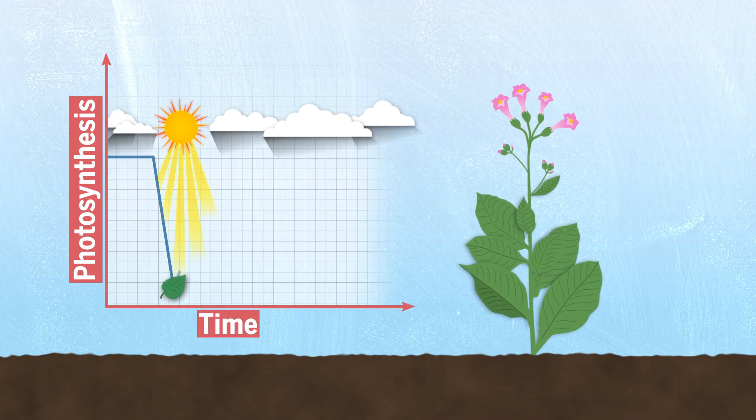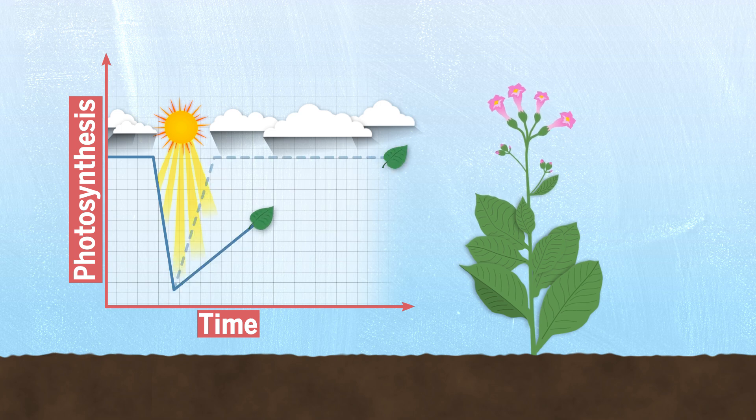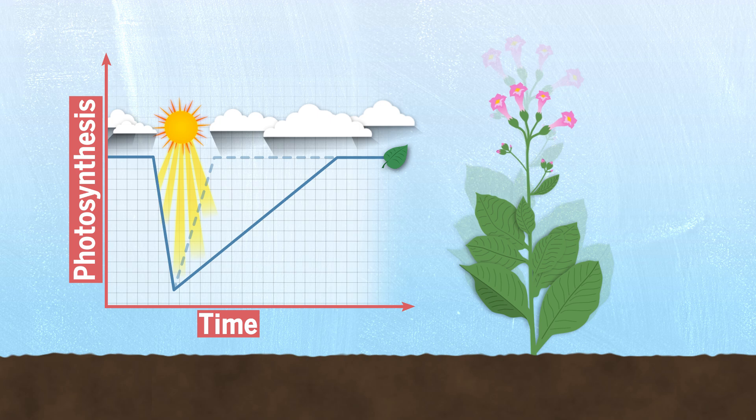Researchers wanted to see if they changed this curve, the speed at which a plant returns to full efficiency, if that could have a big impact on productivity.